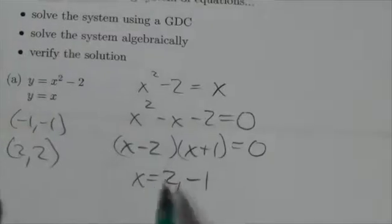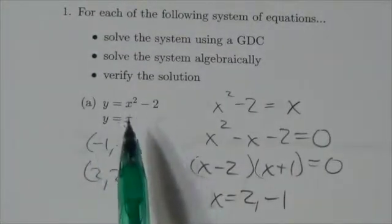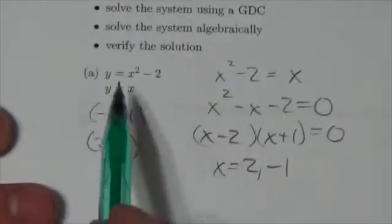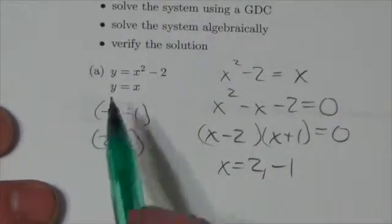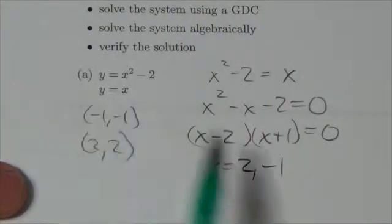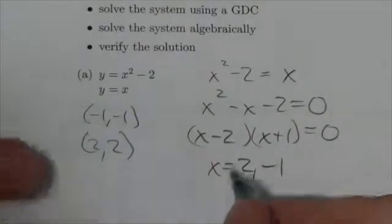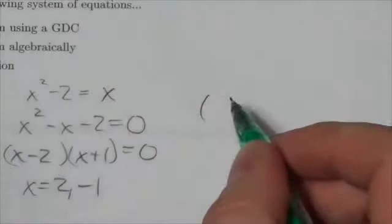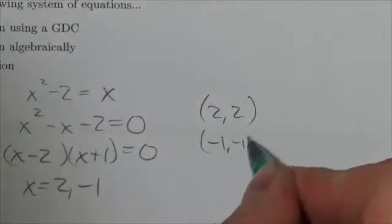Okay. And if I take that and I go back up into the system, I can plug the two and negative one into either one of those equations, but I'm not going to go into the quadratic. I'm going to go into the linear because it's just easier and I'm lazy. So if I plug x is two, y is two. If I plug x equals negative one into x, y equals negative x. So I get, I'm going to get the points two, two, and then the point negative one, negative one.